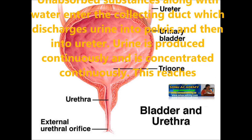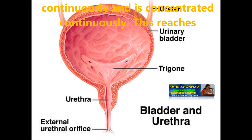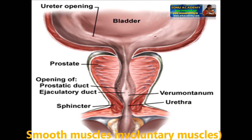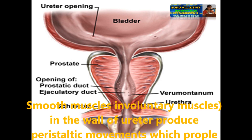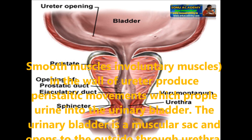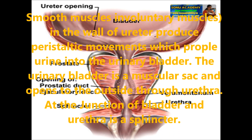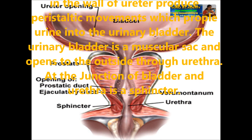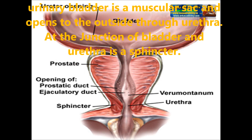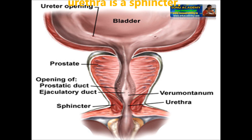Urine is produced and concentrated continuously. It reaches the pelvis and is excreted out. The smooth muscles, meaning involuntary muscles, in the walls of the ureter produce peristaltic movements which propel urine into the urinary bladder. The urinary bladder is a muscular sac and opens to the outside through the urethra. At the junction of the bladder and urethra, there is an opening called the sphincter.